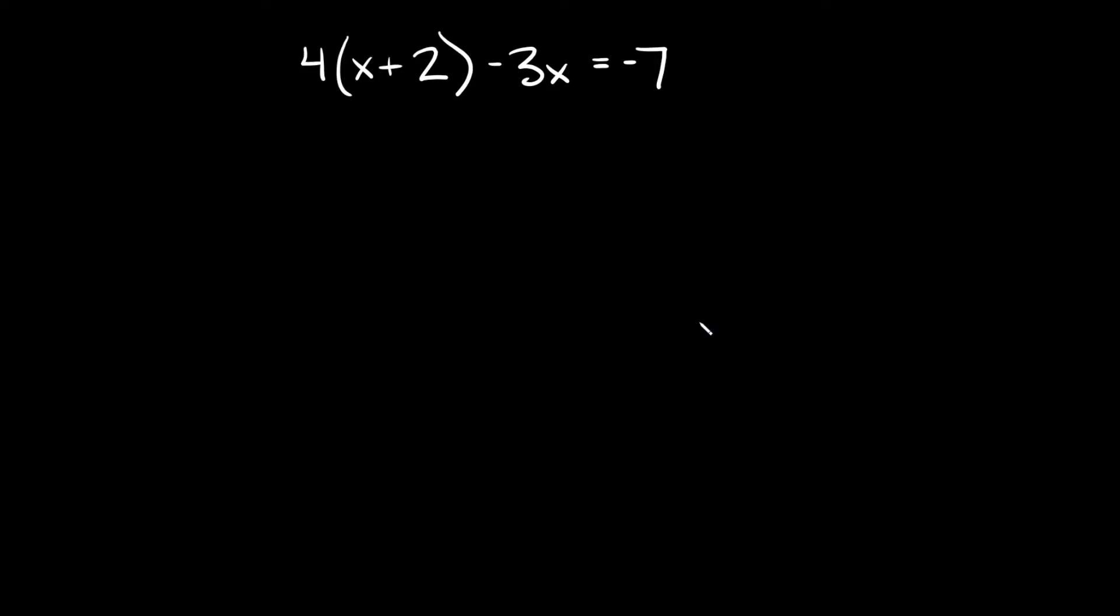What's up you freaking geniuses? So in this video I'm going to teach you how to solve an algebraic expression that requires some distribution. It says four times and then in parentheses x plus two minus three x is equal to negative seven.